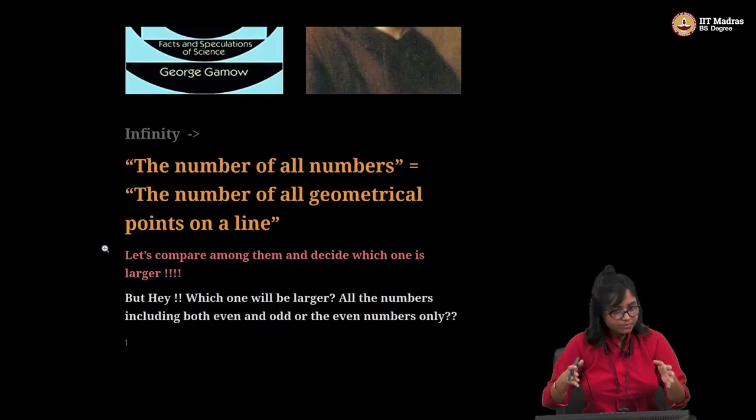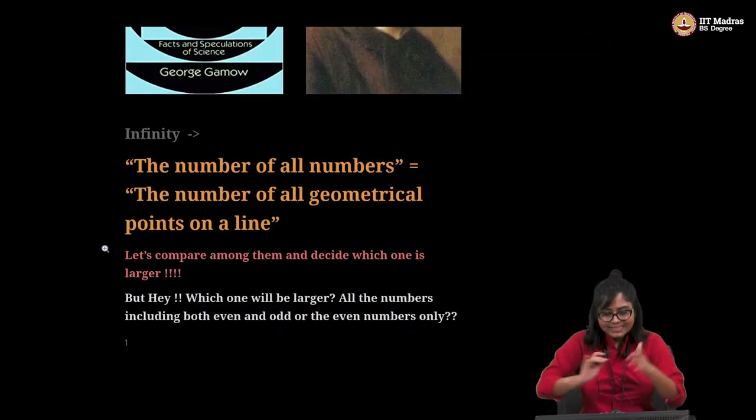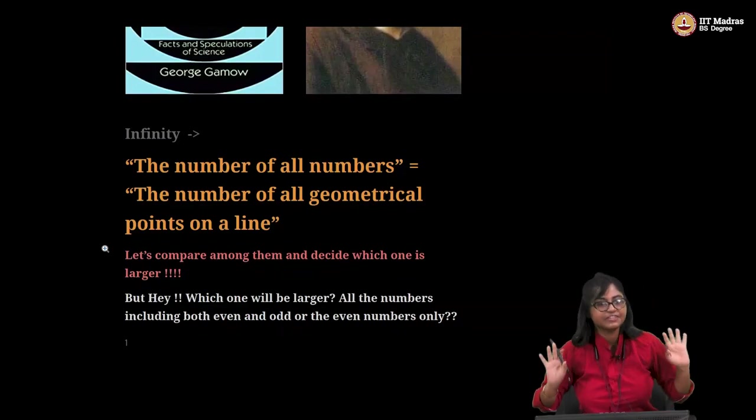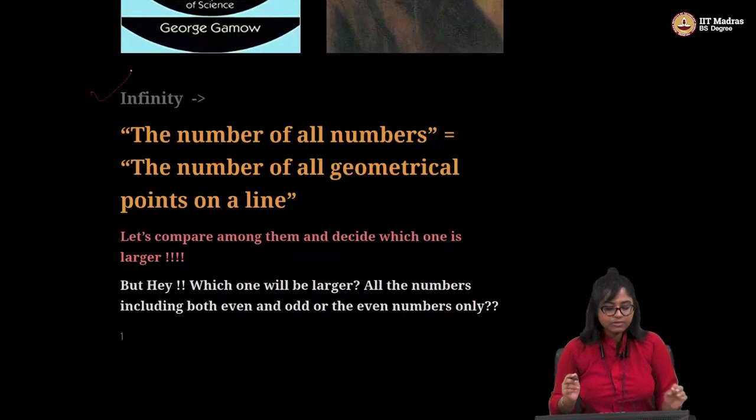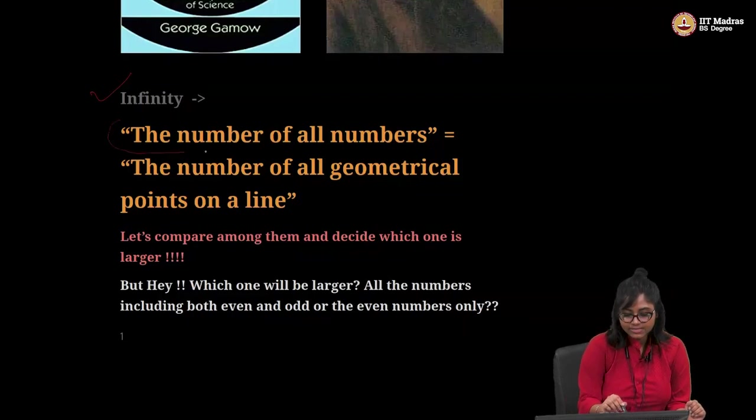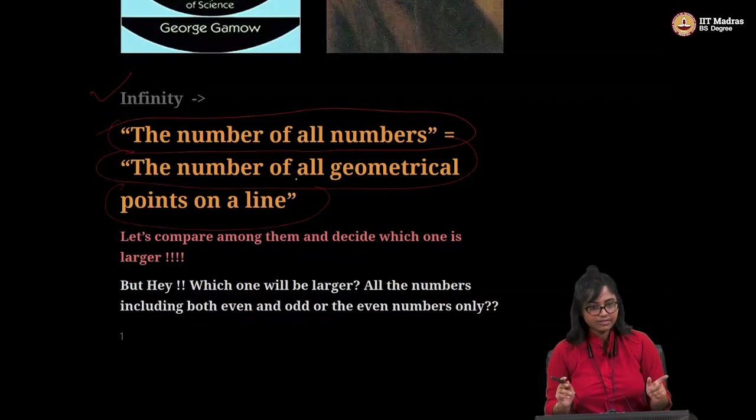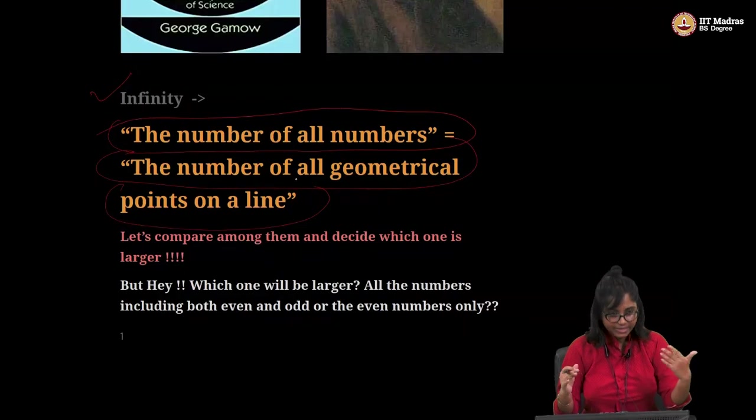So to that tribe, which can count up to one, two, three, that only they can count. So anything apart, like bigger than three, four, five, seven, that is infinity to them. Now George Gamow gives us this very nice argument comparing infinity or he's calling it as the number of all numbers, like the supreme, and he compares it as the number of all geometrical points on a line. Makes sense. Right. For all the points in a geometrical line, that is infinity, like in our conventional way.